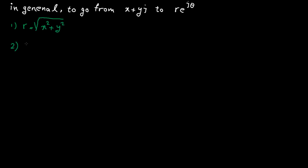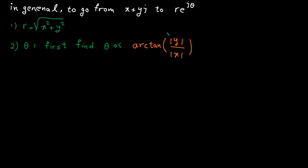For theta, first ignore the sign for real and imaginary parts and find this angle. As you can see, by using the absolute value, we are ignoring the signs.